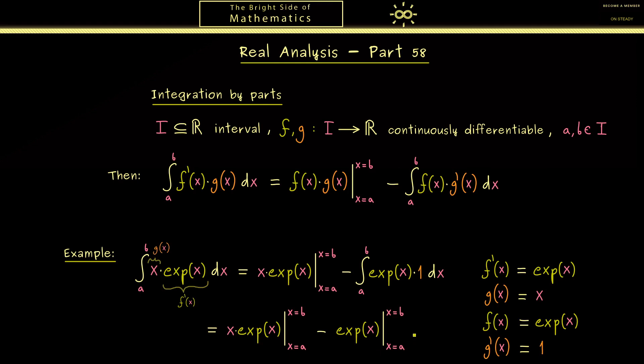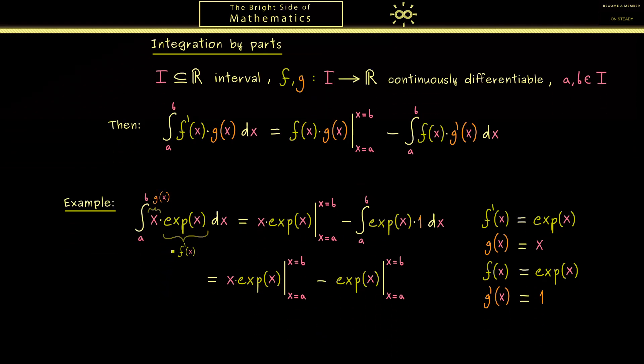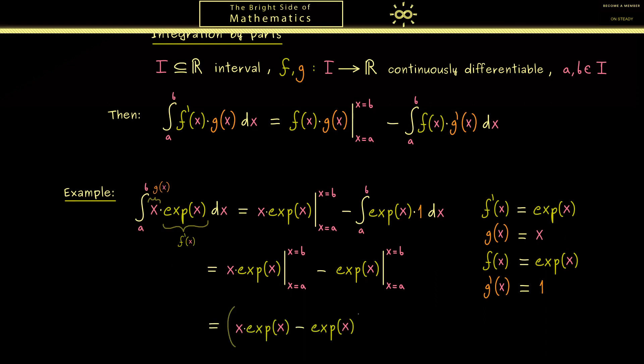We know the antiderivative is the exponential function again. By the fundamental theorem of calculus, this is the exponential function where we first put in b and then subtract when we put in a. In summary, the original integral is solved. We can put both things together. More precisely, the function inside the parenthesis here is the antiderivative of the function x times exp(x). For this reason, sometimes you also see this formula where the limits a and b are omitted.